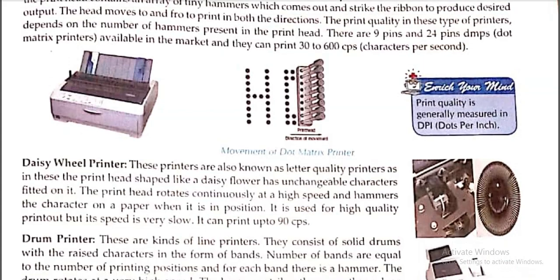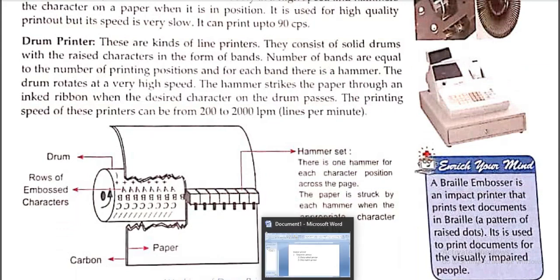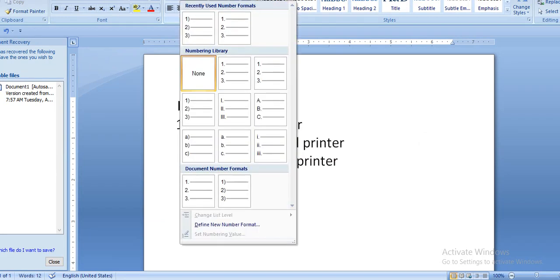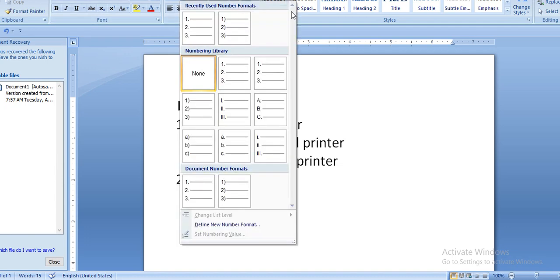Drum printer is part of the line printer, which is the second type of impact printer. Line printer is also of two types: drum printer and chain printer.